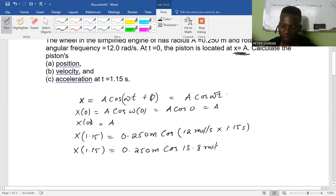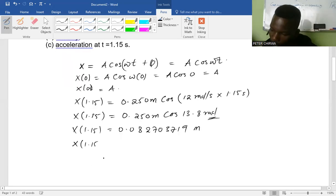So now this is the mistake that you should not make. You should make sure that when you're dealing with such, your calculator is in radians, because remember we have this unit there which is radians. So you have to make sure it's in radians. When you multiply, you're going to have about 0.0703719 meters, which is 0.0827 meters. So this is the position of the piston at time being equal to 1.15.